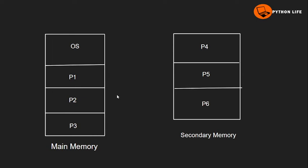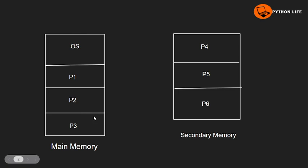Swap in is the operation of transferring a process from secondary memory to main memory. That means a process stored in secondary memory is brought back into main memory.